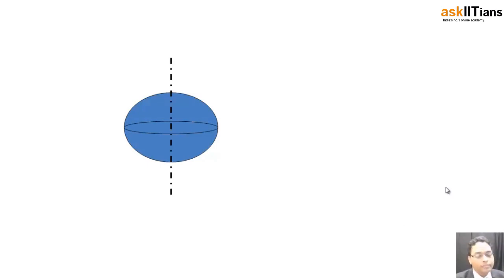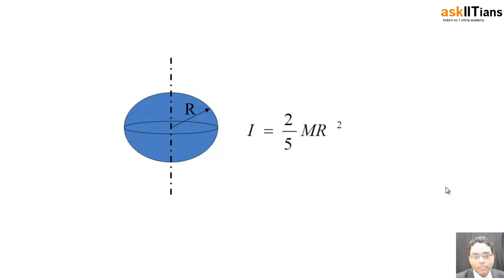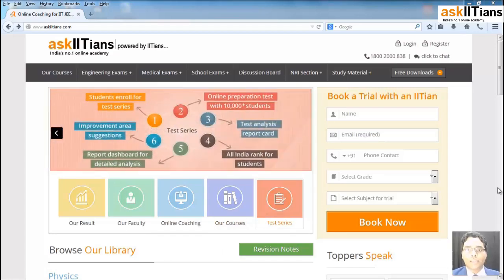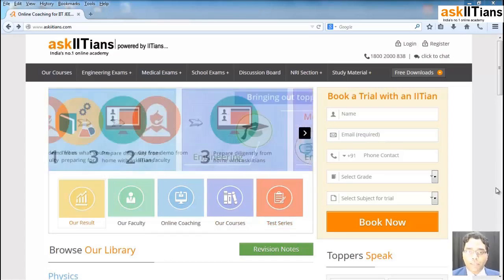Finally, for the case of a sphere, whichever direction you pass the axis it is going to pass through the center, and the moment of inertia is given by (2/5)MR². As a homework problem: if you are required to find the moment of inertia about one of the edges of the diameter — not from the center but from one of the edges — what is the value? You can use the parallel axis theorem to find it out.